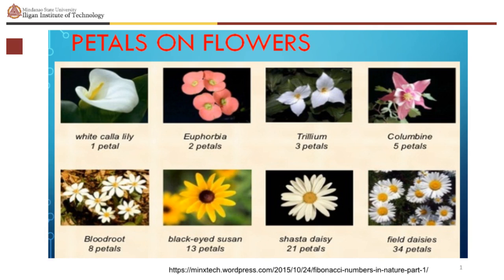Black-eyed Susan has 13 petals, Shasta daisy 21 petals, and field daisies 34 petals. Can you name a flower with a number of petals equal to the next Fibonacci number — which is 55? Correct, 55.